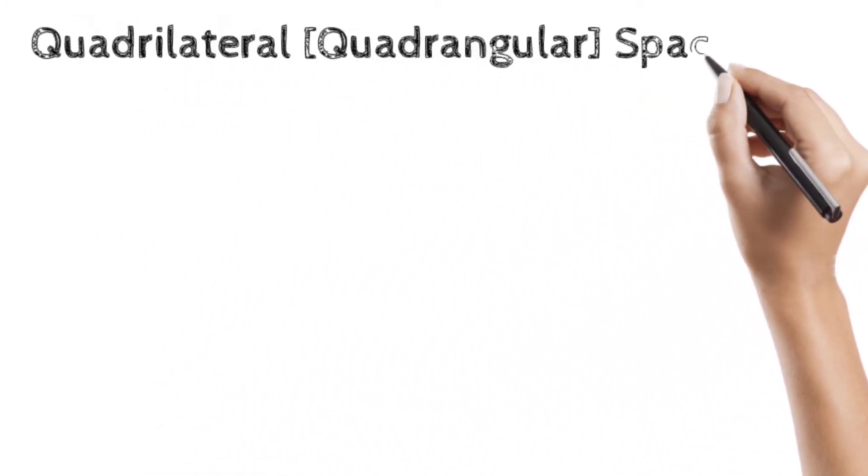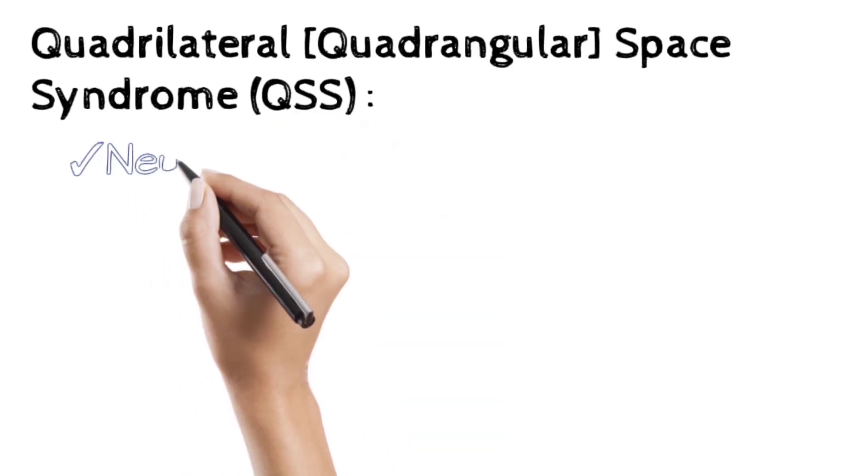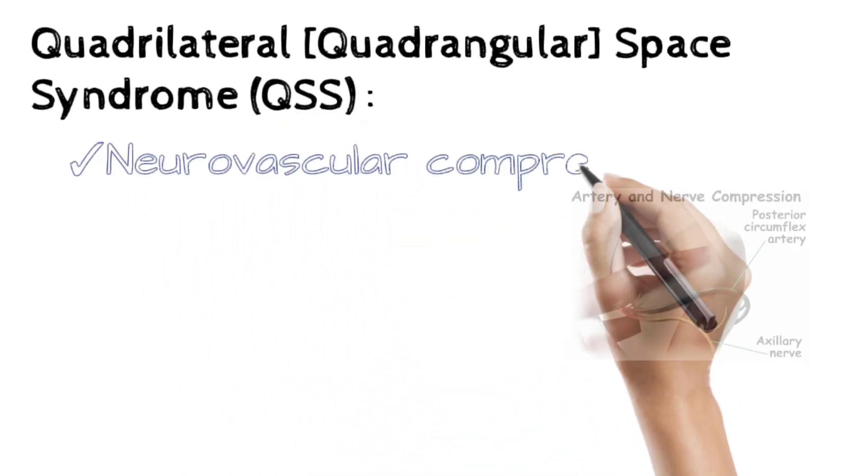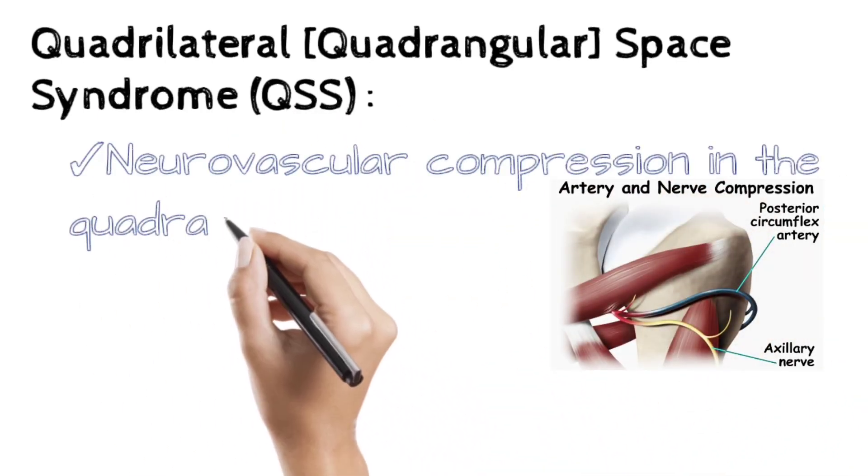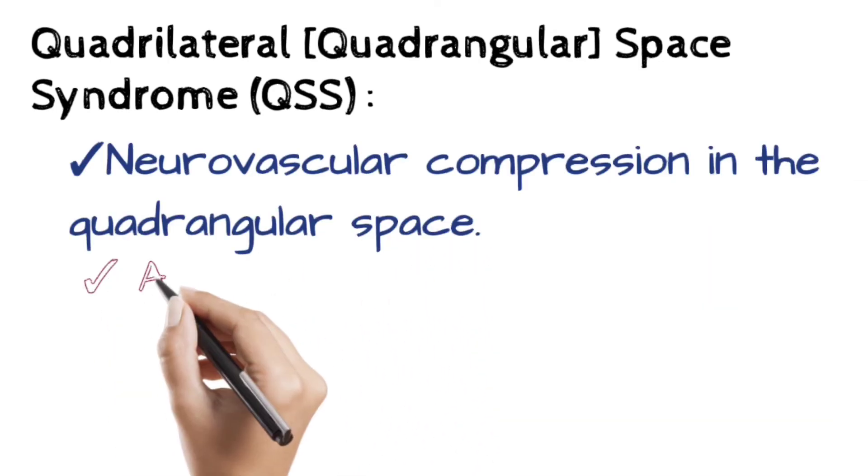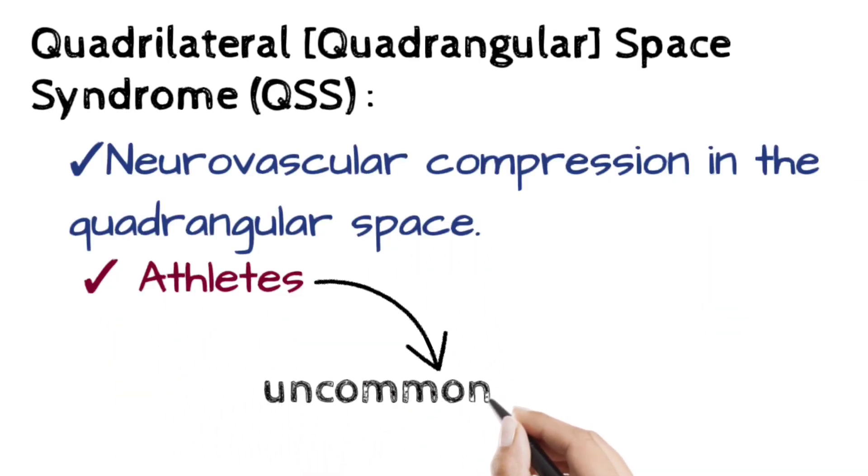Quadrilateral or quadrangular space syndrome (QSS). This is due to neurovascular compression in the quadrangular space. It is an uncommon condition that affects athletes.